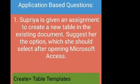Now let us learn the ABQs. First question: Supriya is given an assignment to create a table in an existing document — suggest the option she should select after opening Microsoft Access. She has to create a new table in an existing document. She can use Create and then select Table Templates. There are already built-in table templates available, so she can take a template and make her table. The right answer is: Create > Table Templates.